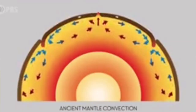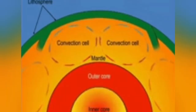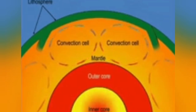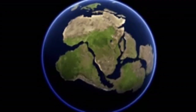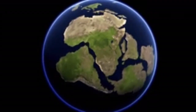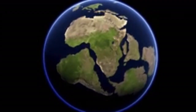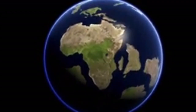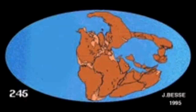The mantle has convection in the case of the Earth, and this convection creates cracks on the surface of the crust, creating what we call continents or plates. These plates move, and they open up and close down oceans.